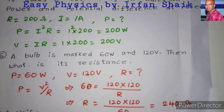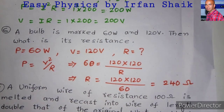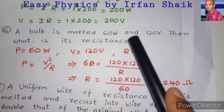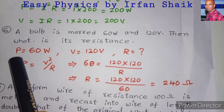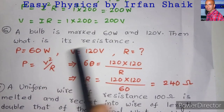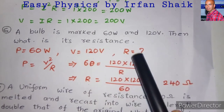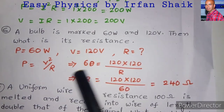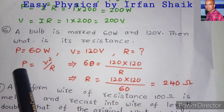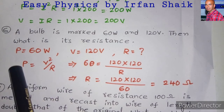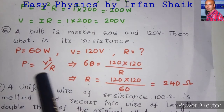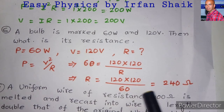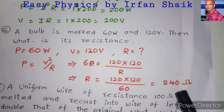Next, move to another problem. A bulb is marked 60 watts and 120 volts. What is the resistance? Power is given as 60 watts and potential difference is 120 volts. We need to find resistance R. The formula to apply here is P equals V squared by R. We know P and V. Rearranging, R equals V squared by P, which gives 120 times 120 divided by 60. Simplifying, we get 240 ohms.